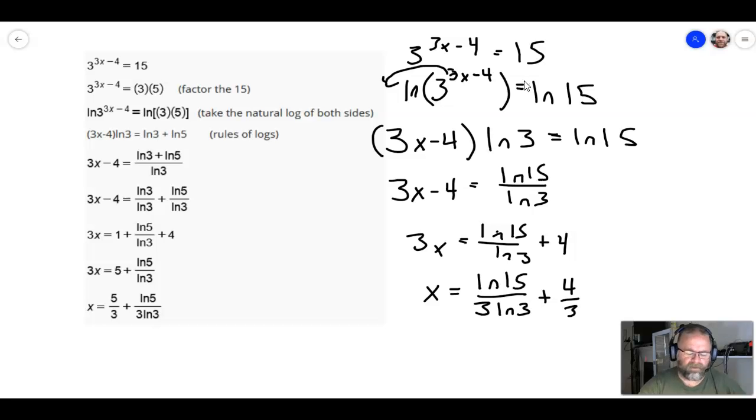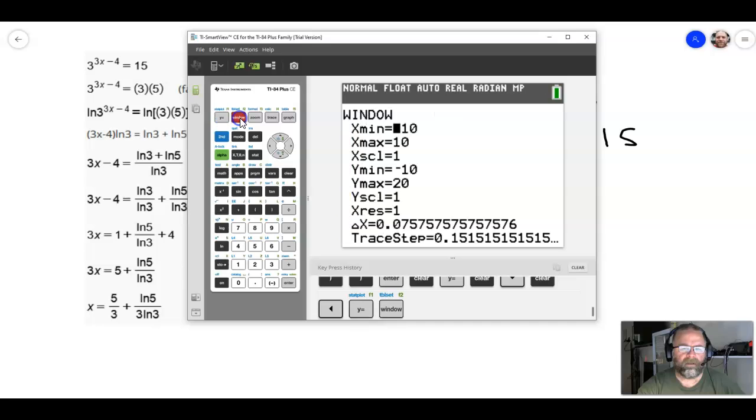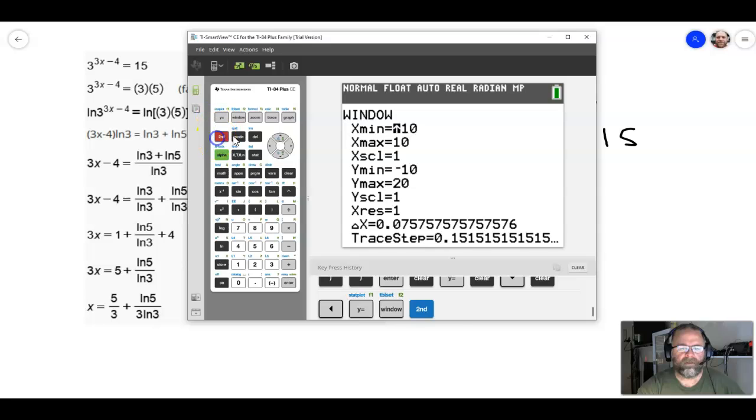And now, there's also another really important thing that I want to show you. So, let's take out the calculator. And what I'm going to do here is first get a decimal approximation for this side over here. Let's get back to the main screen. So, this is 5 thirds plus natural log of 5, natural log of 5, divided by, and I'll put the whole bottom in parentheses since we have a product there, 3 times natural log of 3.